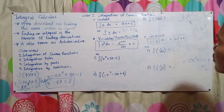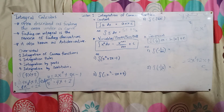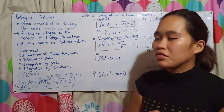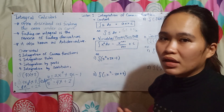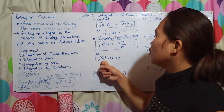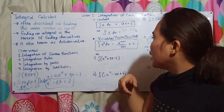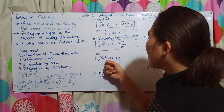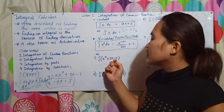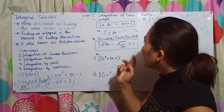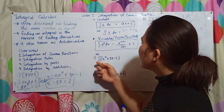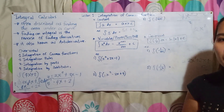Next is the integration of a variable with a power, involving sum and difference, and also a constant. For the power rule, always remember: in integration, you add 1 to the exponent. For example, the integration of (x² + 2x − 1) dx.